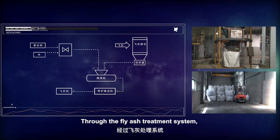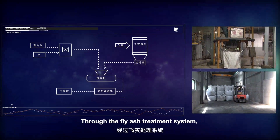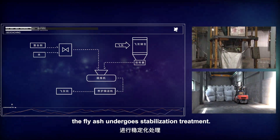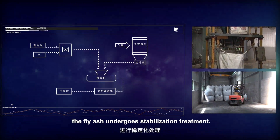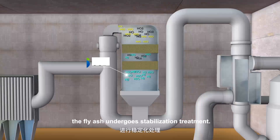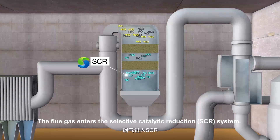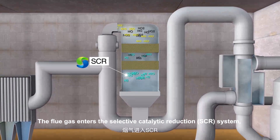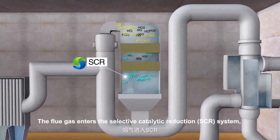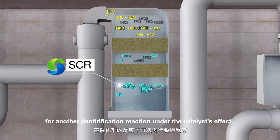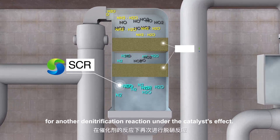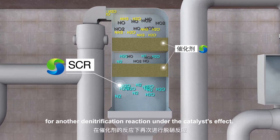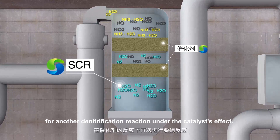Through the fly ash treatment system, by adding a chelating agent, the fly ash undergoes stabilization treatment. The flue gas then enters the selective catalytic reduction (SCR) system, where it is sprayed with ammonia water for another denitrification reaction under the catalyst's effect.